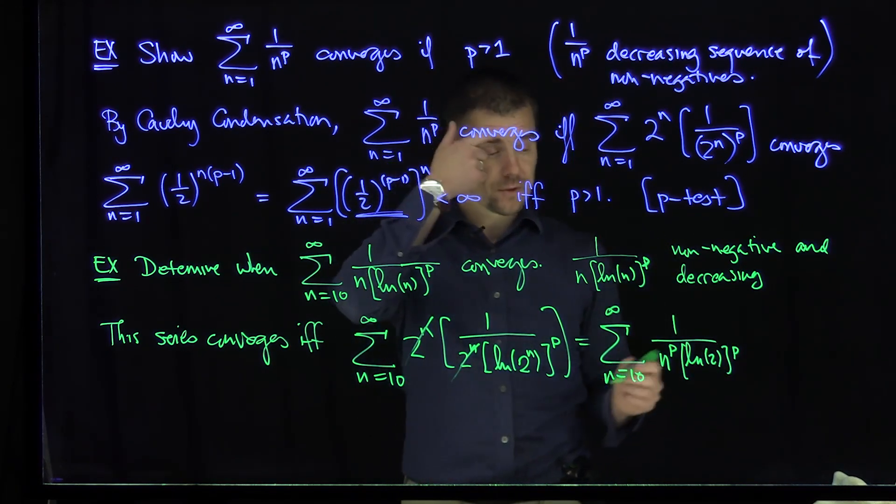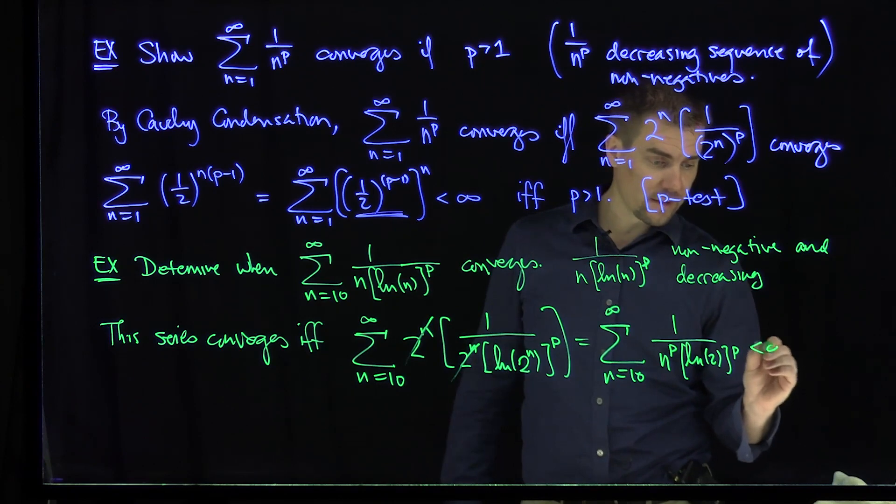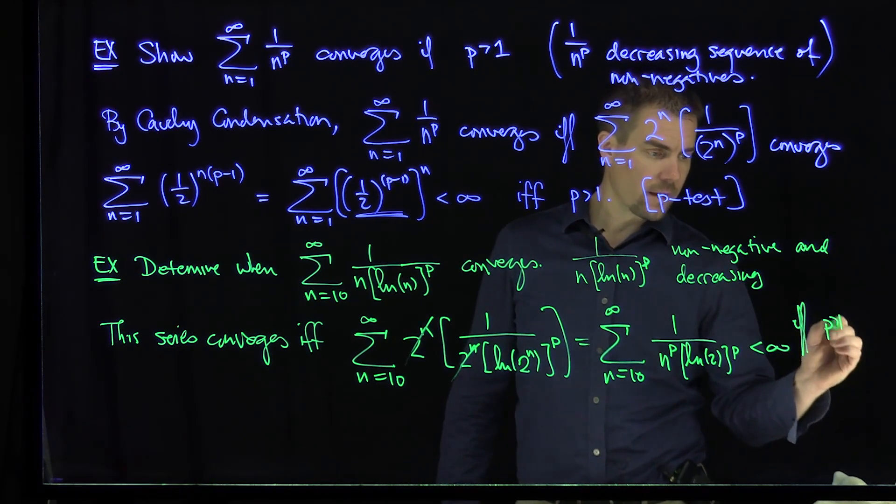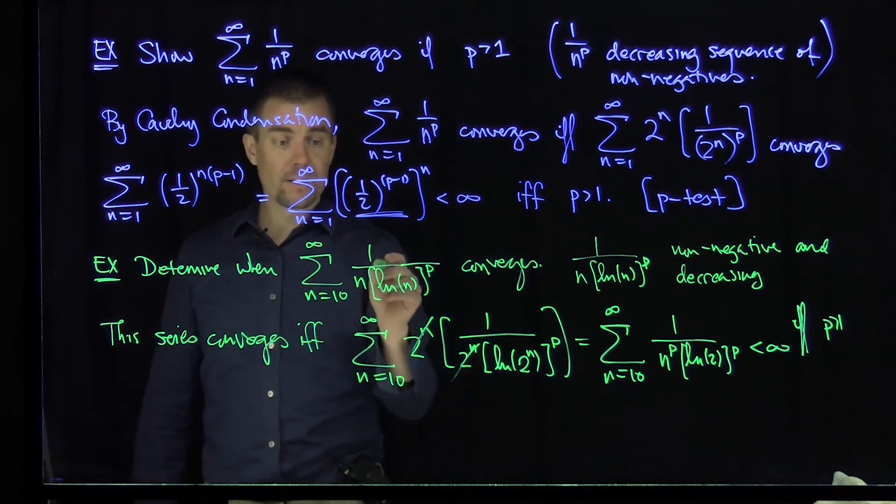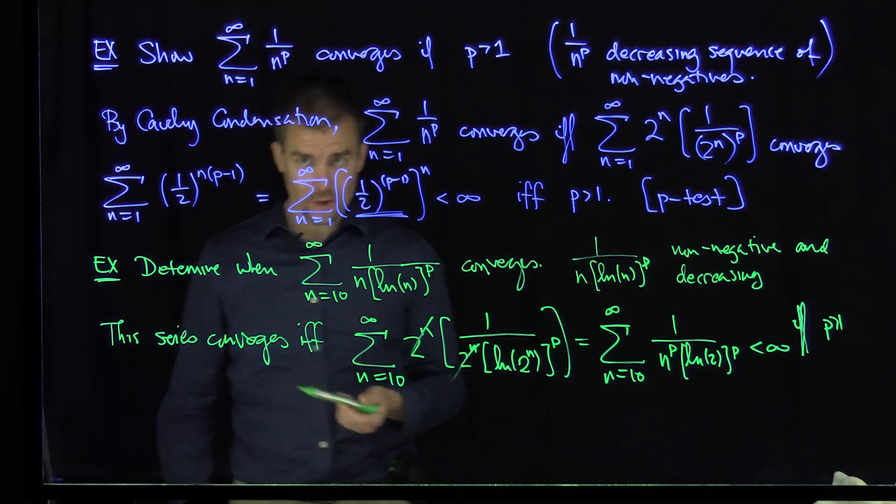And then the log of 2 to the power p. And now we can apply the previous result. This converges if and only if, this is less than infinity, if and only if p is bigger than 1. Strictly bigger than 1. So in other words, this series, 1 over n log n to the power p will converge if and only if p is bigger than 1.